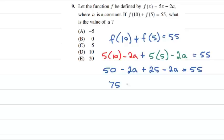5 times 10 is 50 minus 2A plus 25 minus 2A equals 55. 75 minus 4A equals 55. Take away 75 from both sides. Negative 4A equals negative 20. Divide by negative 4. A equals positive 5. Therefore, the answer is C.